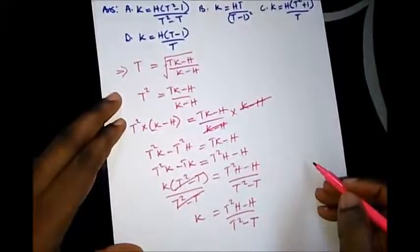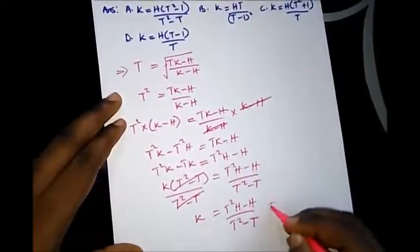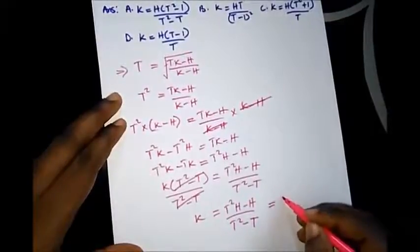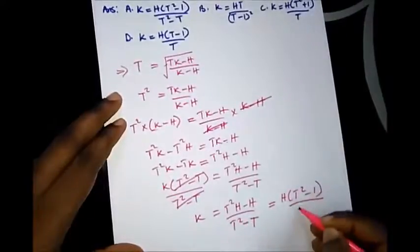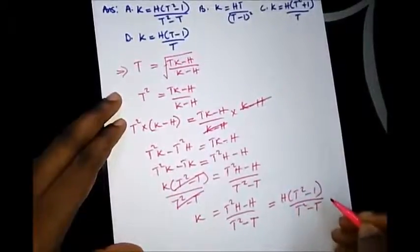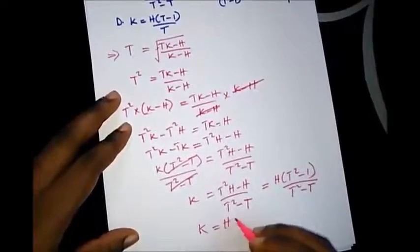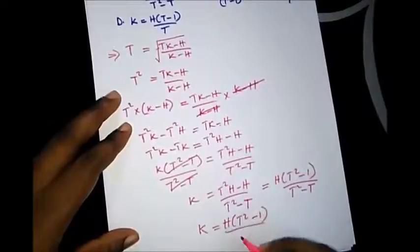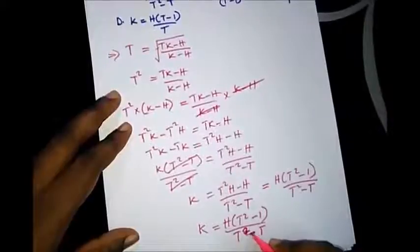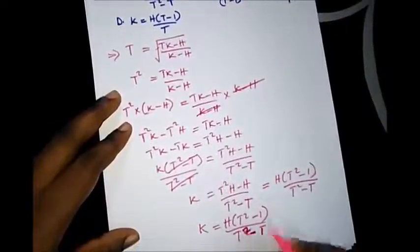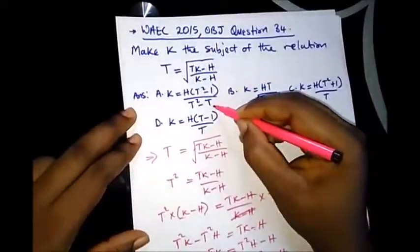We can further simplify by bringing H out as a common factor: K is equal to H bracket T squared minus 1 over T squared minus T. So this is our answer: K is equal to H(T squared minus 1) over T squared minus T. Our correct option here is option A.